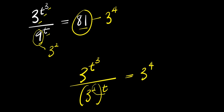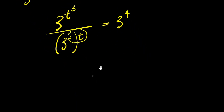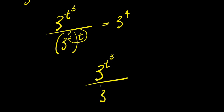So multiplying this out, we are simply going to have 3 to the power of t to the power of 3, divided by 3 to the power of 2 times t — that is 2t — and this equals 3 to the power of 4.